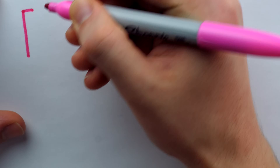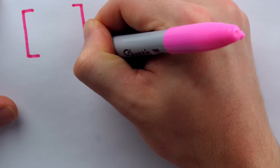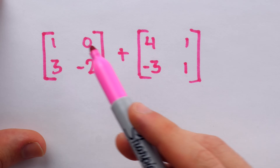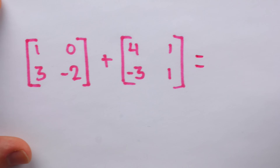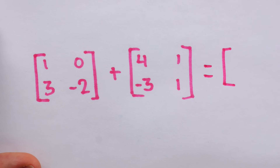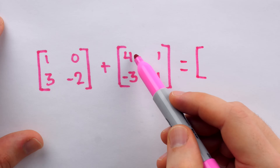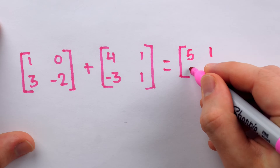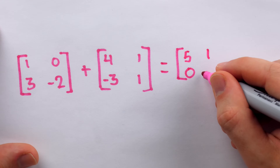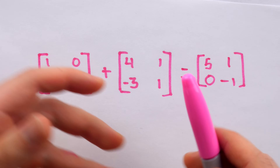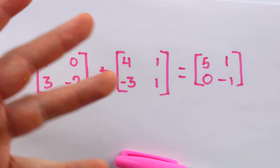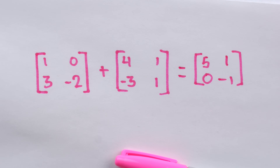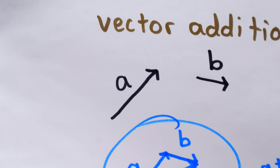Another common type of addition familiar to numerical addition is the addition of matrices — rectangular grids of numbers. If two matrices have the same size, we can add them together by simply adding their corresponding entries. So 1+4=5, 0+1=1, 3+(−3)=0, and −2+1=−1. Matrices have tons of applications, and one of the most common ways a mathematician perceives a matrix is as a transformation on a vector that can move and spin vectors around the Cartesian plane.